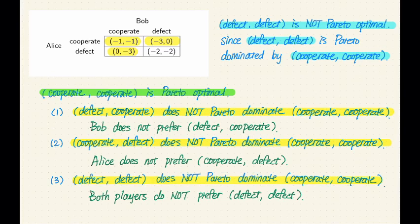Let's look at the first case. We want to compare defect-cooperate and cooperate-cooperate, and verify that defect-cooperate does not Pareto dominate cooperate-cooperate. To do that, we just have to find one player who does not weakly prefer the bottom outcome. If we look at Alice, Alice does prefer the bottom outcome, so that doesn't work. But if we look at Bob, for the bottom outcome Bob gets minus three; for the top one he gets minus one. So Bob does not prefer the bottom outcome, which means the bottom one does not Pareto dominate the top one. So cooperate-cooperate is not Pareto dominated by defect-cooperate.